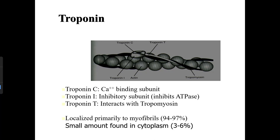Troponin — from A&P, you may recall troponin, tropomyosin, and calcium's role in mediating muscle contraction. Troponin C is the calcium-binding subunit; troponin I is the inhibitory subunit that inhibits ATPase; troponin T interacts with tropomyosin. Troponin is localized primarily to myofibrils, with a small amount found in the cytoplasm.